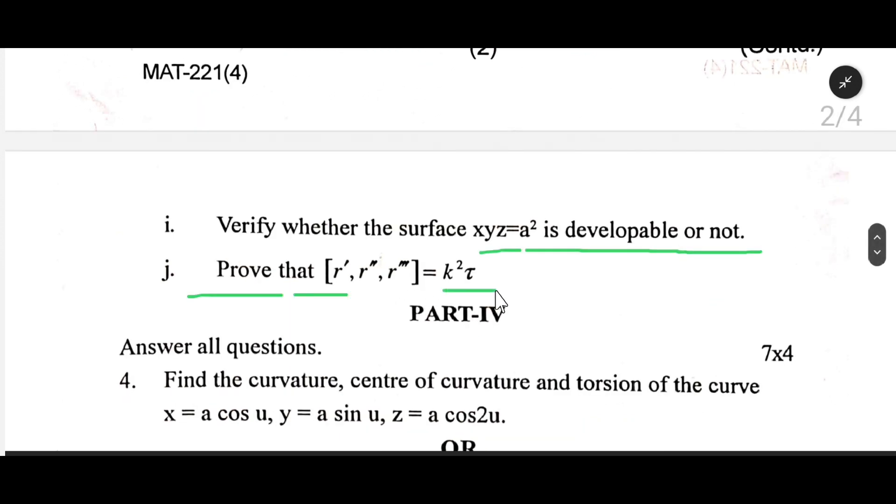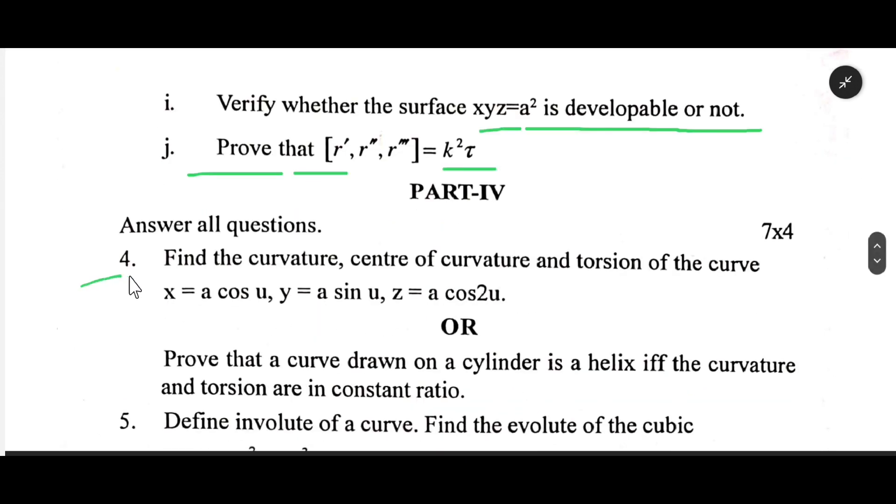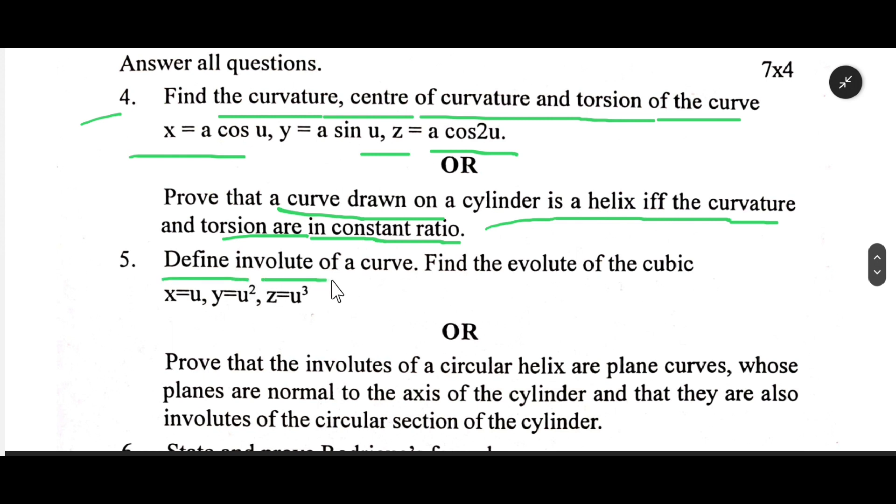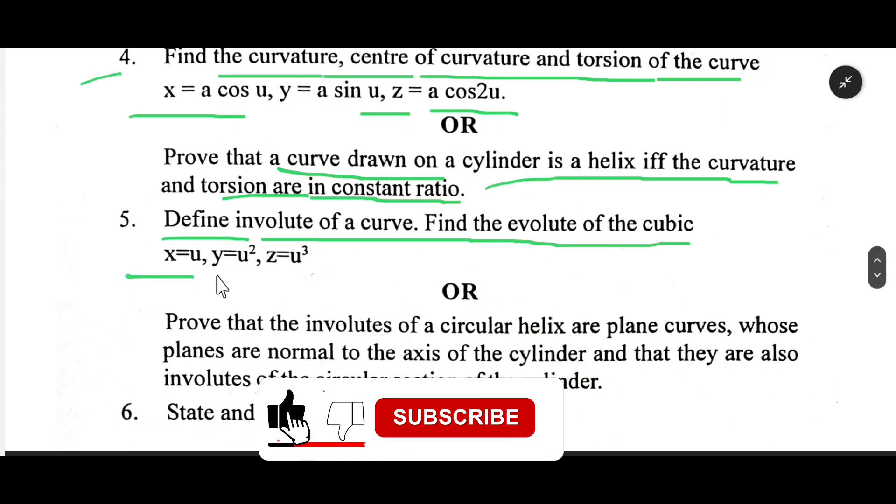Part 4: Answer all questions. Number four: Find the curvature, center of curvature, and torsion of the curve x = a cos u, y = a sin u, z = a cos 2u. Prove that a curve drawn on a cylinder is a helix if the curvature and torsion are in constant ratio. Define involute of a curve. Find the evolute of the cubic x = u, y = u², z = u³.